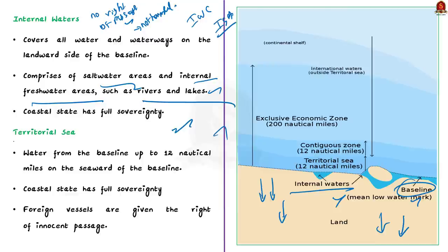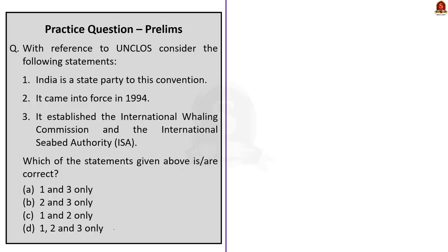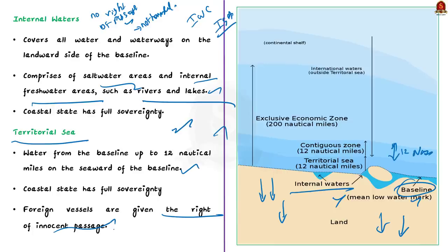Moving on, let us look at territorial seas. It is the water from the baseline up to 12 nautical miles on the seaward side of the baseline. Coastal states have full sovereignty and are free to set laws and regulate the use of any resources. The coastal state also has sovereignty over the airspace above the territorial sea, the seabed, and the subsoil beneath the territorial sea. Note that here, foreign vessels are given the right of innocent passage. This is the key difference between territorial sea and internal waters.